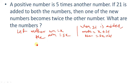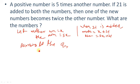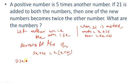According to the question, one of the new numbers becomes twice the other. Since x is smaller, 5x plus 21 is greater than x plus 21. So 5x plus 21 equals twice the other number, which means 2 into (x plus 21). This gives us the equation: 5x + 21 = 2x + 42.